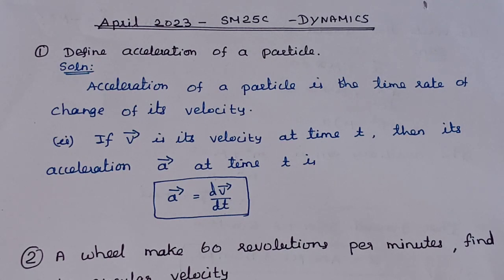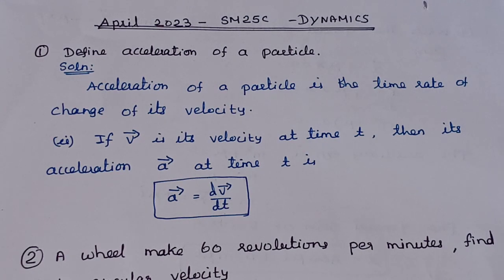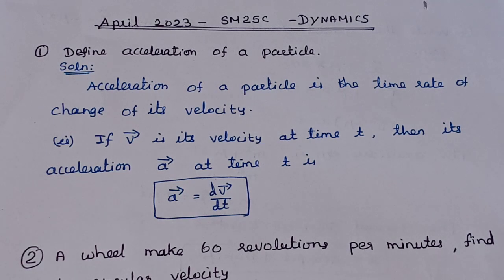Define acceleration of a particle. Acceleration of a particle is the rate of change of velocity. If you say it simply, you will get 2 marks. The more complete answer: acceleration of a particle is the time rate of change of its velocity.